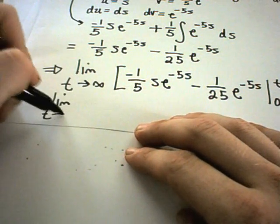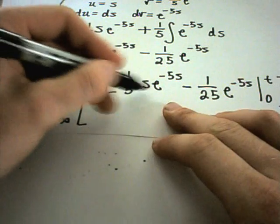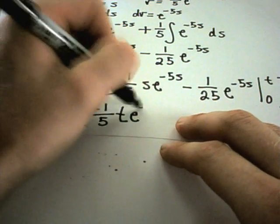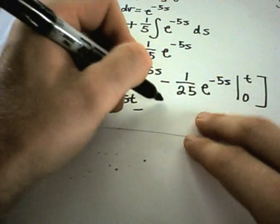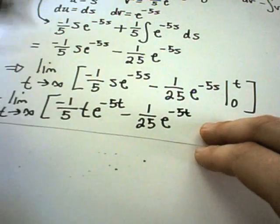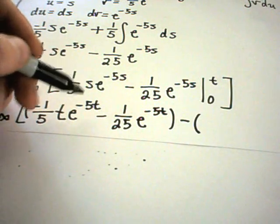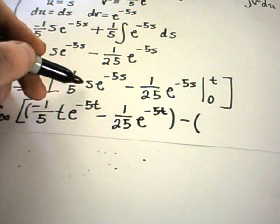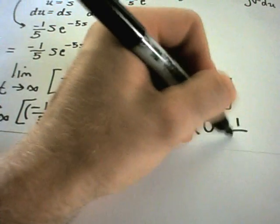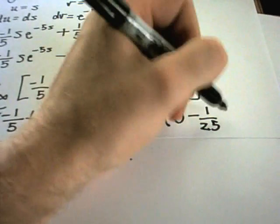We still have the limit as t goes to infinity. Plugging in the upper limit — everywhere I have the variable s — I get −(1/5)·t·e^(−5t) − (1/25)·e^(−5t). Then I subtract the lower limit plugged in at 0: the first term gives 0, and the second term gives −(1/25)·e^0, and e^0 = 1, so that's −(1/25).